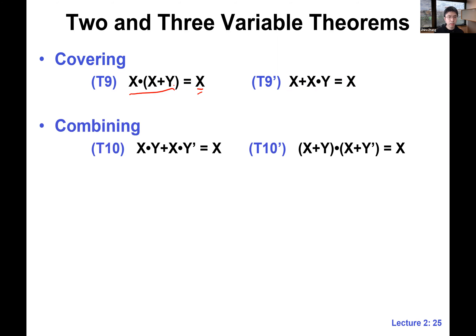T10 and T10-prime are very important, especially T10 — we'll use them a lot in the next lecture. It's called combining: it's really about canceling things out. These theorems are really about simplification. We're building circuits and we care about cost, so all these variables, operators, and gates add silicon area or delay. That's why we want to simplify as much as we can.